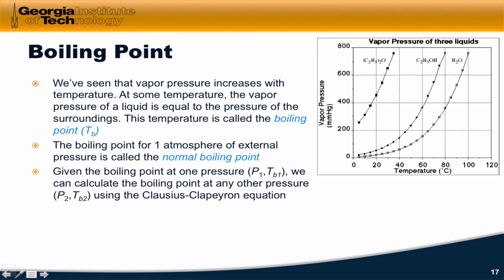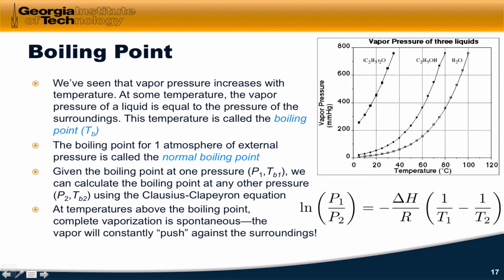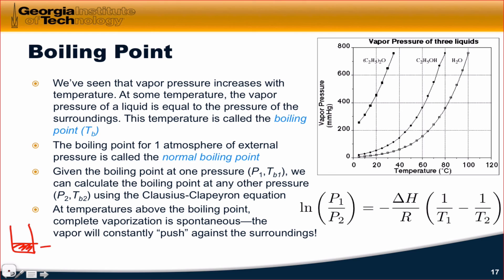If we know the boiling point at atmospheric pressure, we can calculate the boiling point at any other pressure using the Clausius-Clapeyron equation — plug in the new pressure and atmospheric pressure along with the normal boiling point, and solve for the new boiling point T_B2. One thing to note is that at temperatures above the boiling point, complete vaporization of the liquid is spontaneous, because the vapor will constantly push against the surroundings. If the liquid's temperature is greater than T_b, the pressure exerted by the vapor molecules is greater than the atmospheric pressure, and so complete vaporization becomes spontaneous.